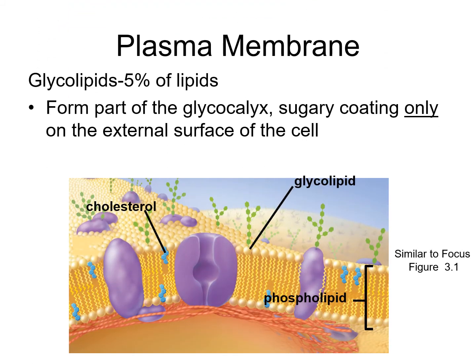Attached to some phospholipids is a carbohydrate component, making those phospholipids glycolipids. These carbohydrate components, shown in green, are only found on the external face of the plasma membrane. Looking across the external face, you can see they form a sugary coating on the external surface of the cell.